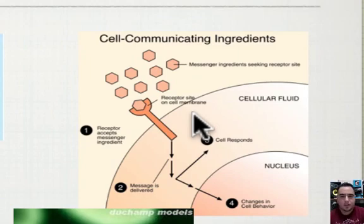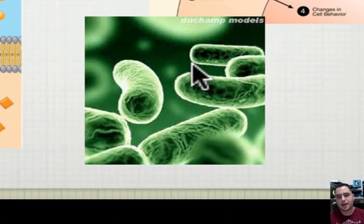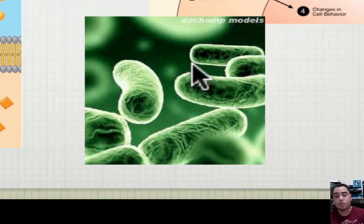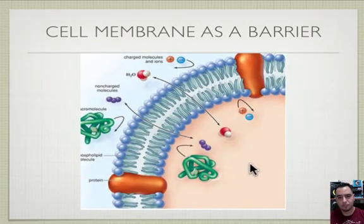The cell also communicates through hormones, and the cell membrane allows that communication. Some things the cell won't allow in at all, like bacteria and other harmful substances — so the membrane acts as a barrier, blocking things you don't want getting in.